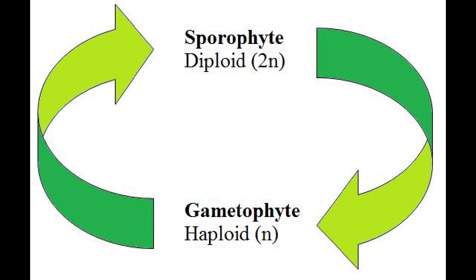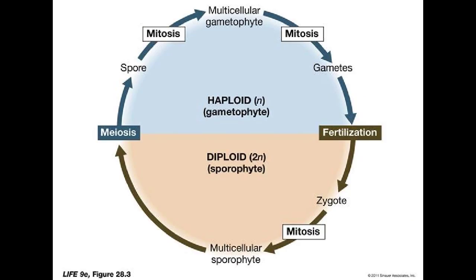The alternation of generations describes the life cycle of plants. In the simplest of terms, plants alternate between being a gametophyte and a sporophyte. A gametophyte is a haploid with n chromosomes, and a sporophyte is a diploid with two n chromosomes.